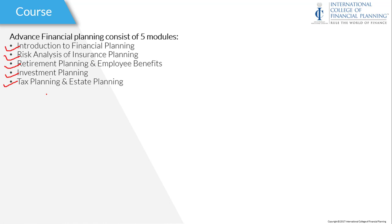Now I will explain the difference between a Regular Pathway and the Challenge Status Pathway. In a Regular Pathway, you need to clear these four modules first. For the first module, there is no exam — this is basically a pillar of all the modules. So first, Risk Analysis and Insurance Planning, then Retirement Planning and Employee Benefits, then Investment Planning and Tax Planning. And after that, you can appear for the Advanced Financial Planning.